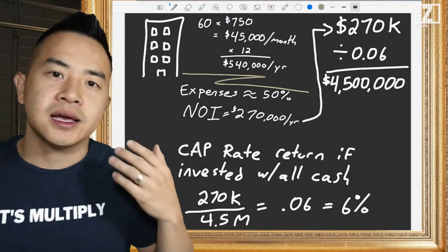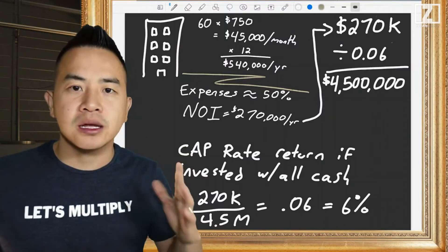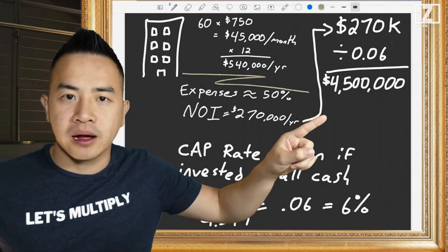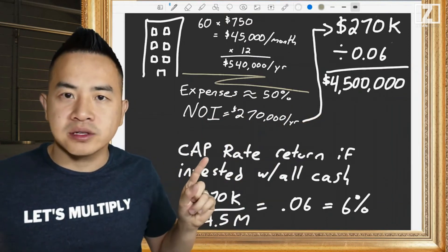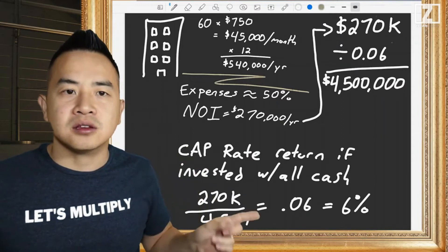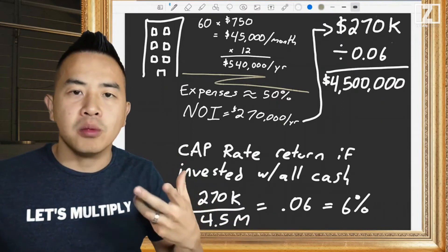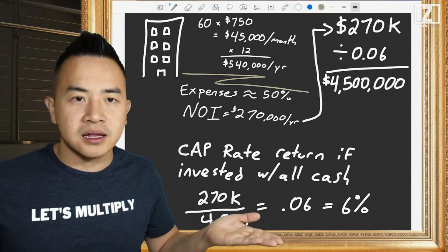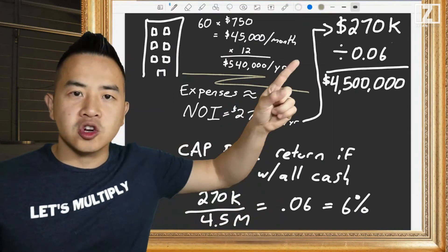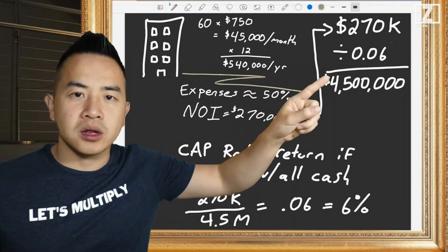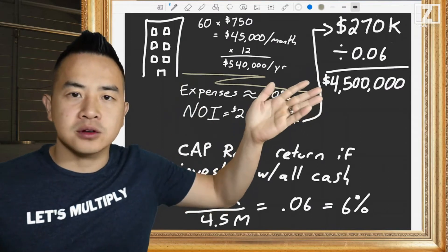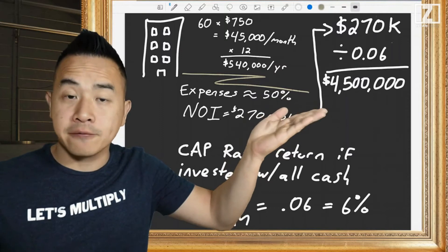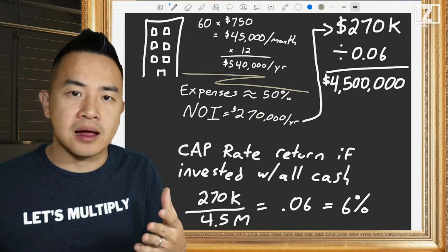This apartment building produces a 6% return if you bought it all cash — put in $4.5 million, and the NOI you receive is your 6% return. If all apartment buildings in the area are selling at around this cap rate, that's what you'll use to figure out what you want to buy it for. If you're buying at a six cap, there you go — that's the price you'll be paying.